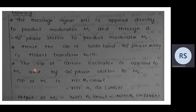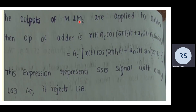The carrier oscillator output is applied to M1, and through a 90-degree phase shifter to M2. Output of M1 is x(t)·ac·cos(2πfc·t). Output of M2 is x̂(t)·ac·sin(2πfc·t). The adder output is x(t)·ac·cos(2πfc·t) + x̂(t)·ac·sin(2πfc·t), which simplifies to ac·[x(t)·cos(2πfc·t) + x̂(t)·sin(2πfc·t)]. This expression represents the single sideband signal containing only the USB, rejecting the lower sideband.